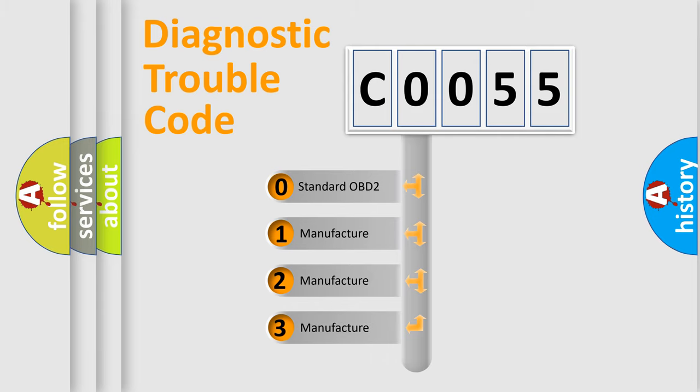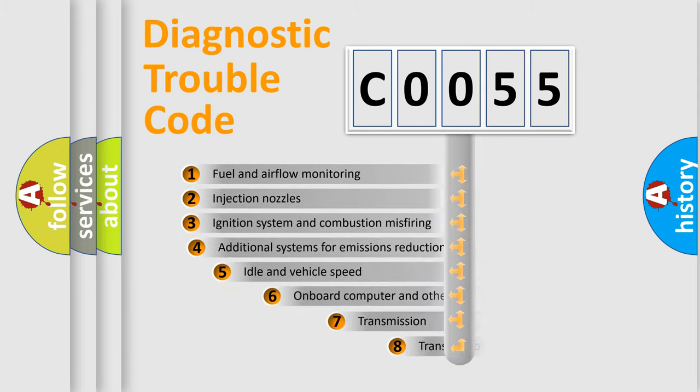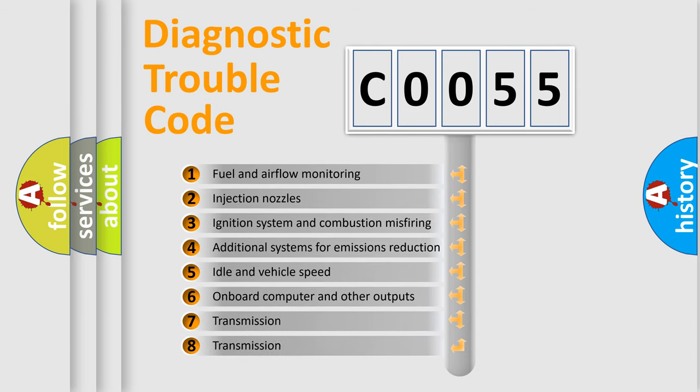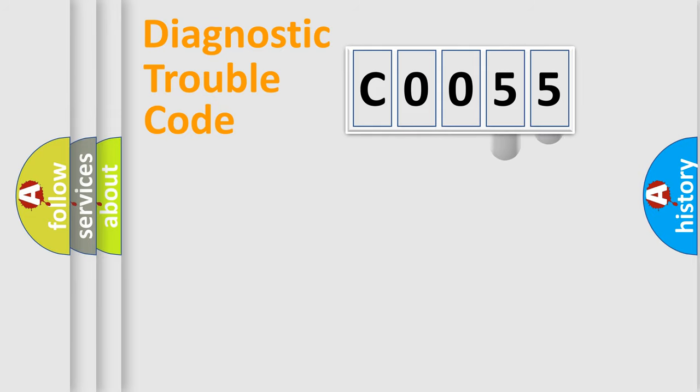If the second character is expressed as zero, it is a standardized error. In the case of numbers 1, 2, or 3, it is a more prestigious expression of the car-specific error. The third character specifies a subset of errors.